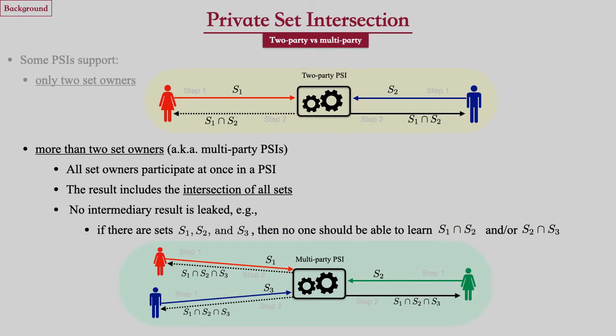Some PSI protocols can support only two clients and some can support more than two clients. The PSI protocols that support more than two clients are usually called multi-party or multi-client PSI. In multi-client PSI, the participants only need to learn the final result — the intersection of all sets — and nothing about even the intersection of pairs of sets should be revealed.